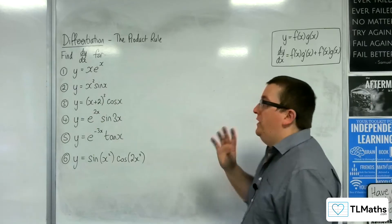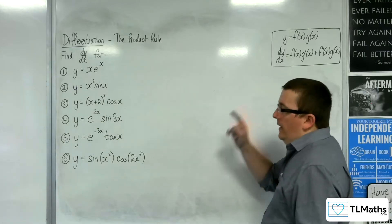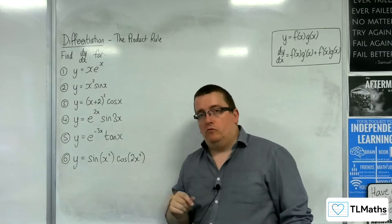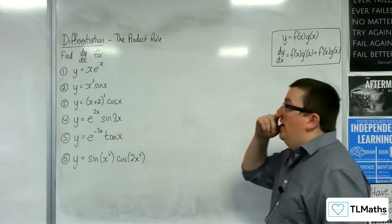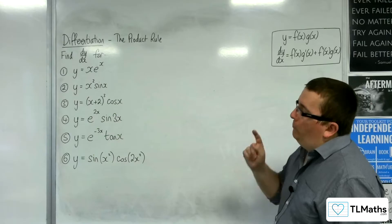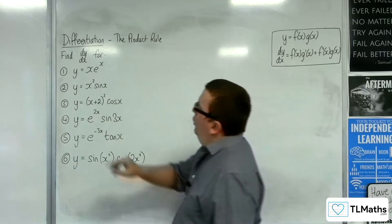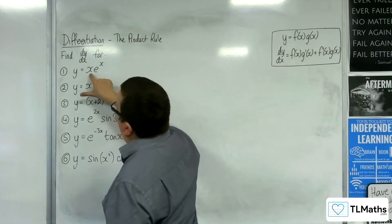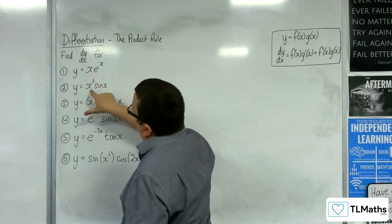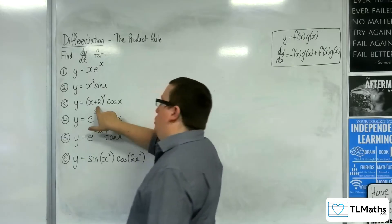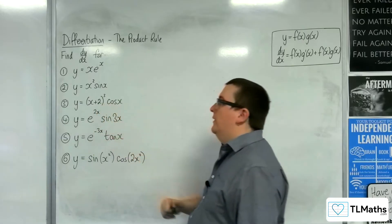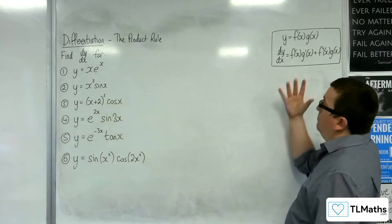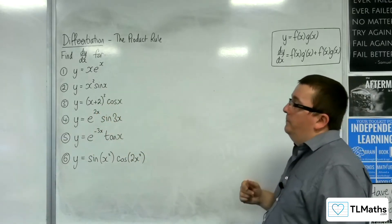In this video, I want to differentiate each of these, and I'm going to use the product rule in order to do it. Each of them is a product of two separate functions: x and e to the x, x squared sine x, x plus 2 cubed, cosine x, and so I can use the product rule to do them.